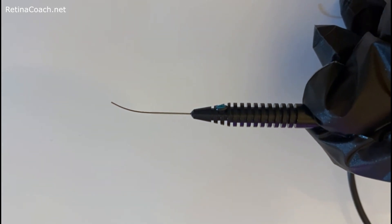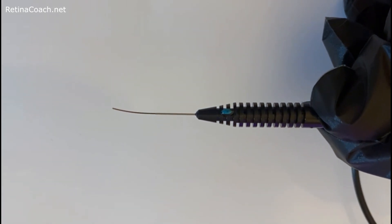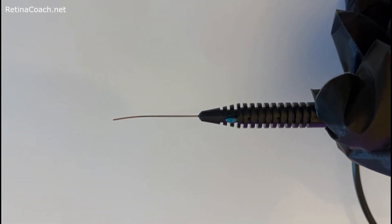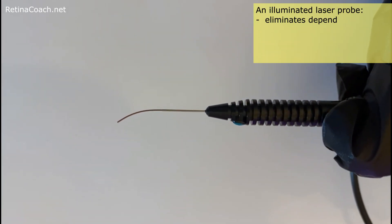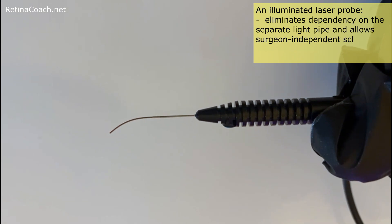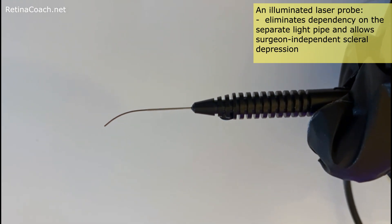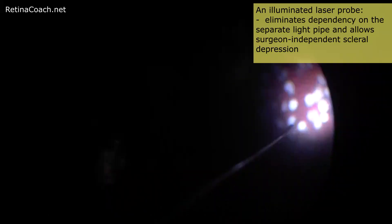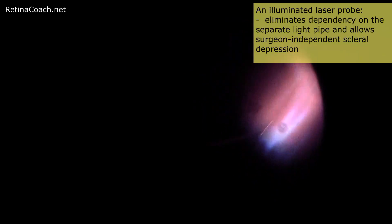The illuminated laser probe has an optical fiber integrating lighting and laser abilities. Therefore, this probe eliminates dependency on a separate light pipe and allows the surgeon independent scleral depression for peripheral retinal breaks during laser treatment.